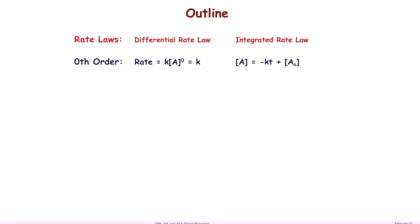Zeroth order tells you that the exponent for a chemical is zero. Anything to the zero power is just one — 38 to the zeroth is one, 28 to the zeroth is one. This means that the rate for this reaction is constant for zeroth order kinetics, and that rate is equal to the rate constant k.